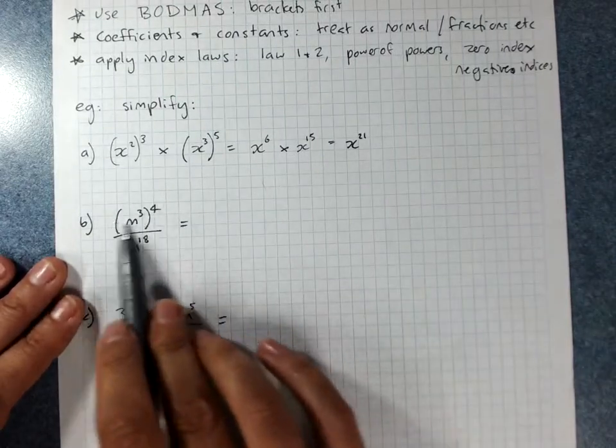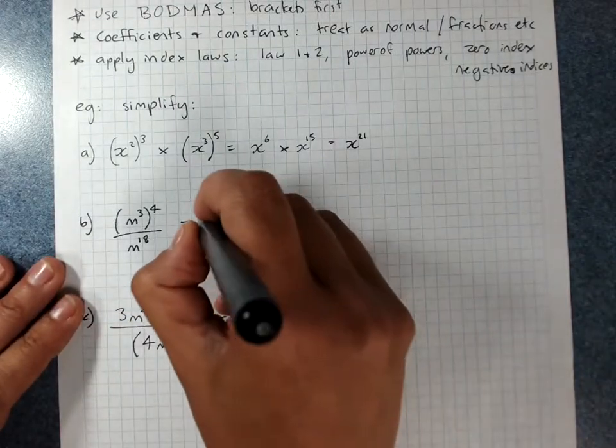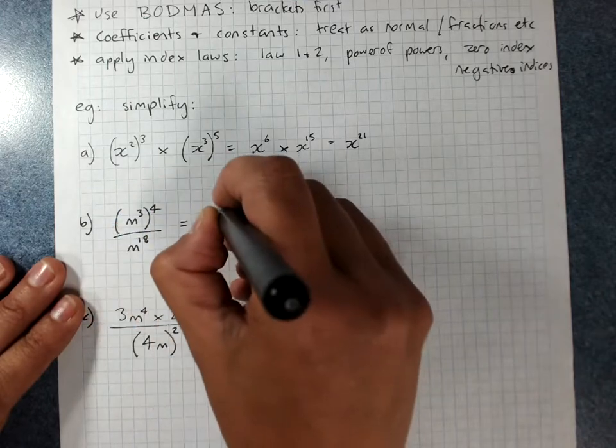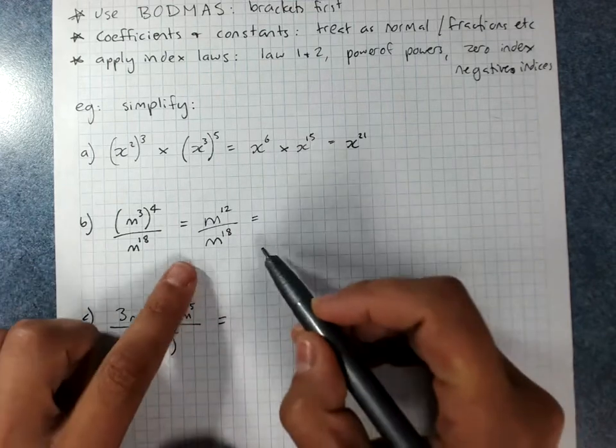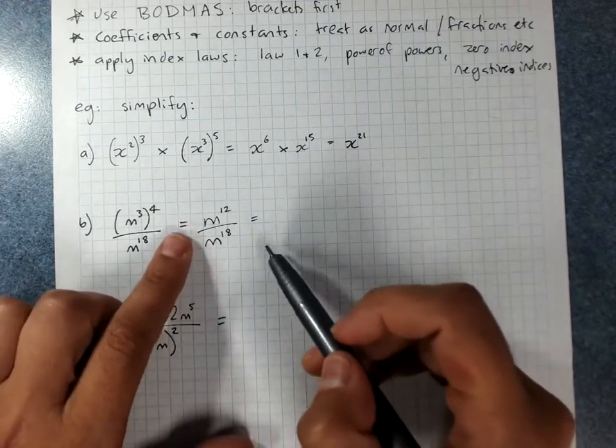This one, power of powers to start with. I've got m to the power of 3 times 4 is 12, over m to the power of 18. Then, being very careful with this, this is not m to the power of 6.